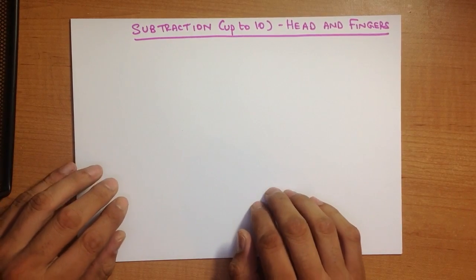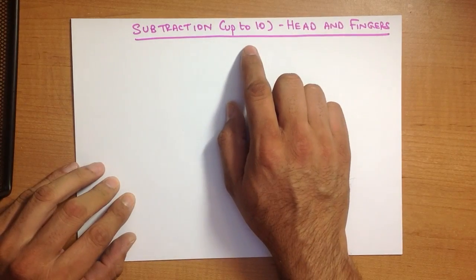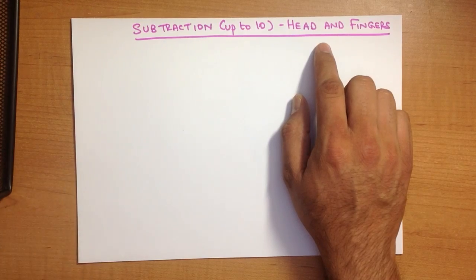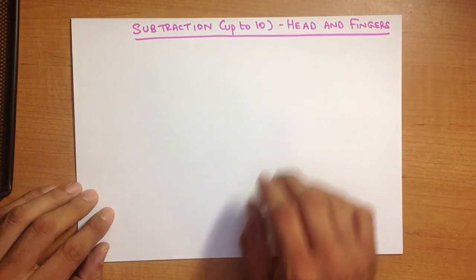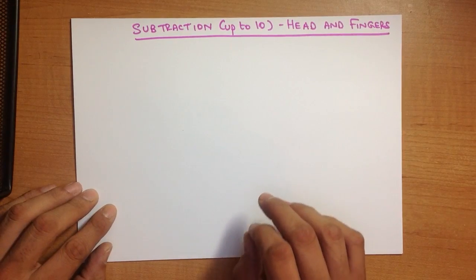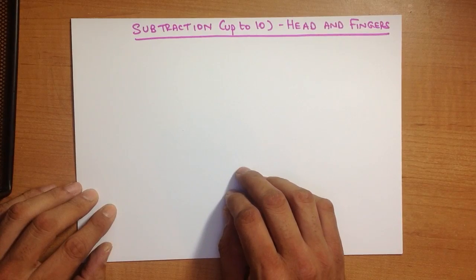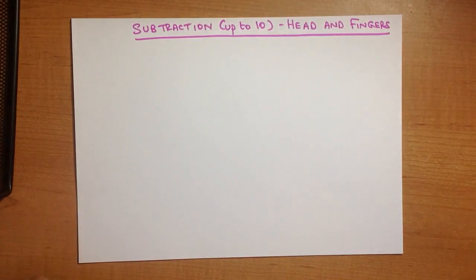In this tutorial, we are going to go through subtraction of numbers up to 10 using the head and fingers method. Remember, the head and fingers method is ideal for mental arithmetic. This is when the teacher is asking you a question and you have to do the question in your head without any paper.